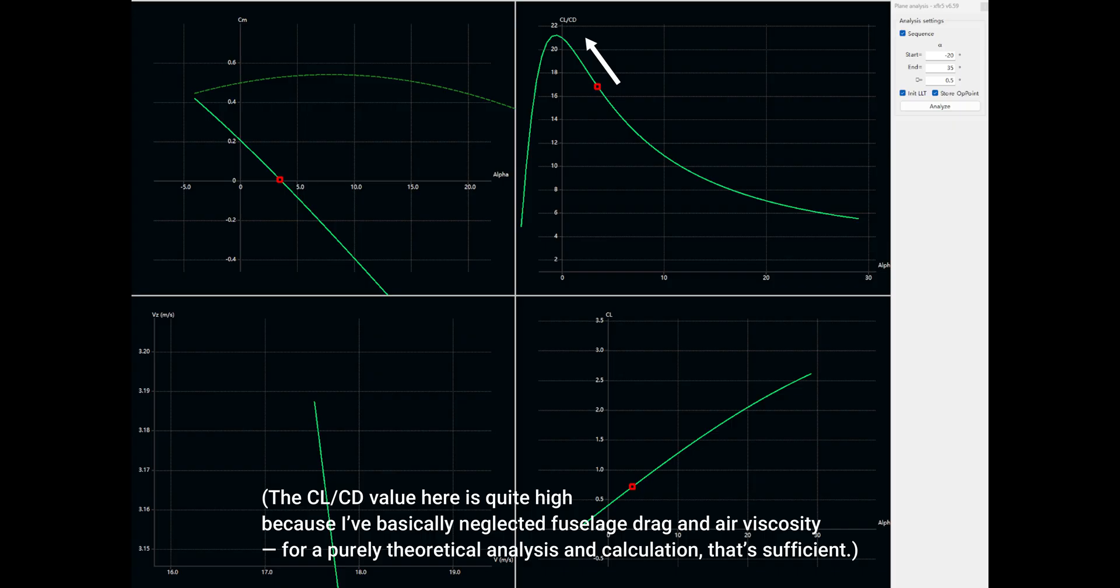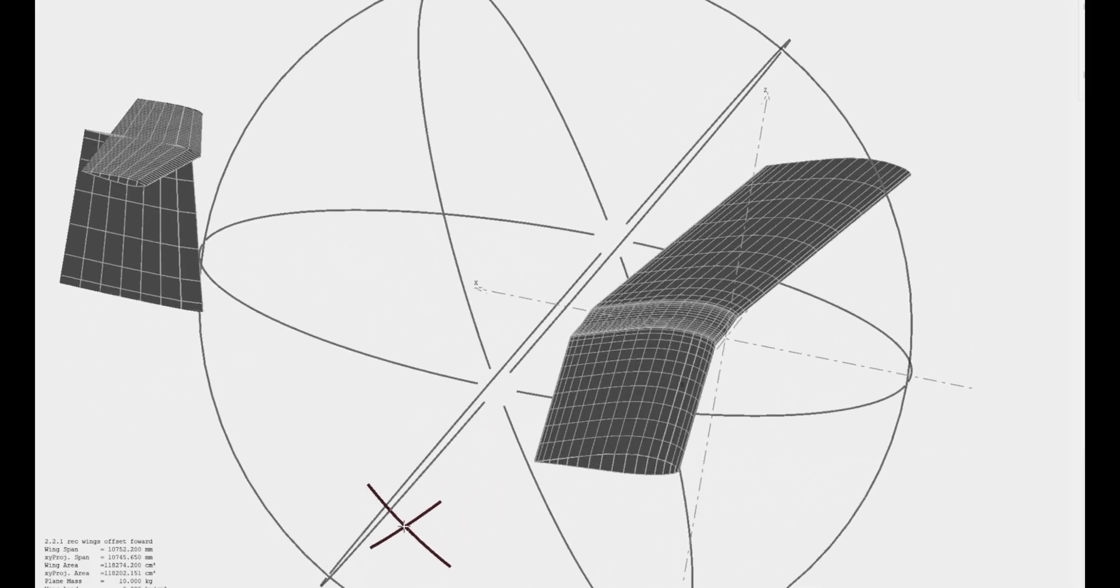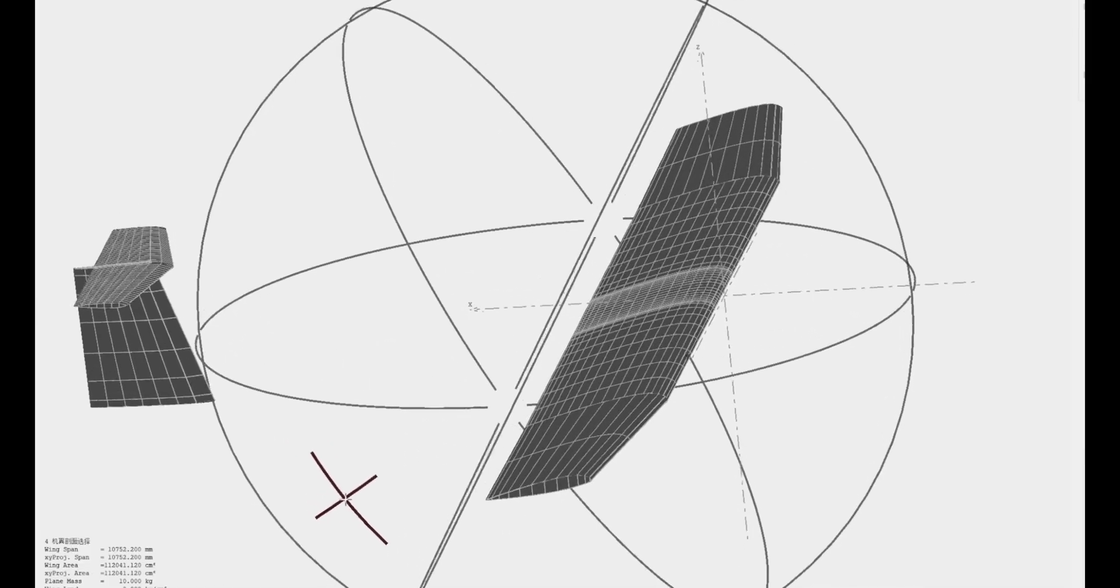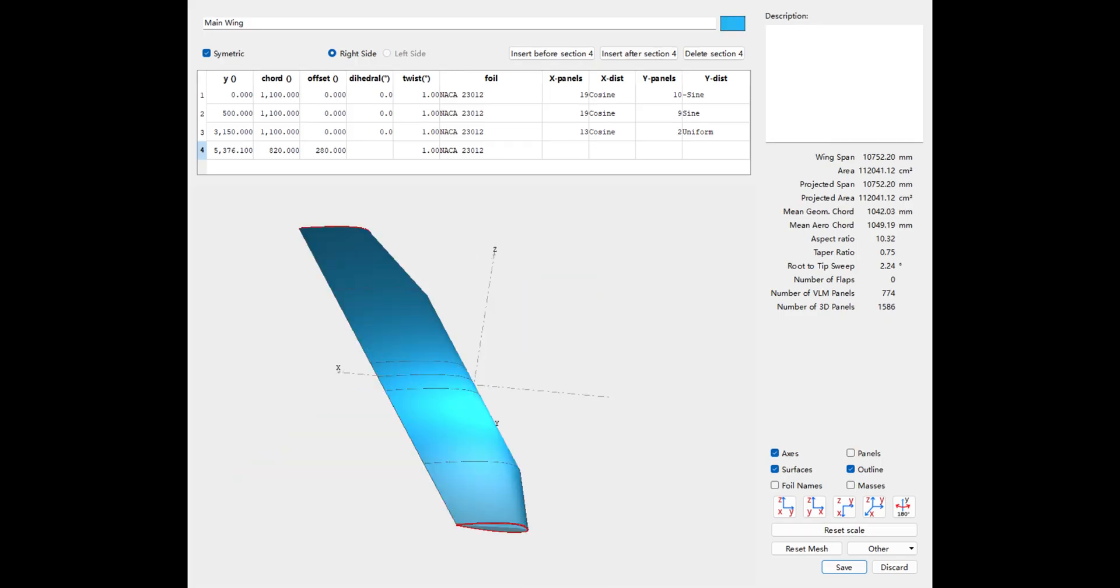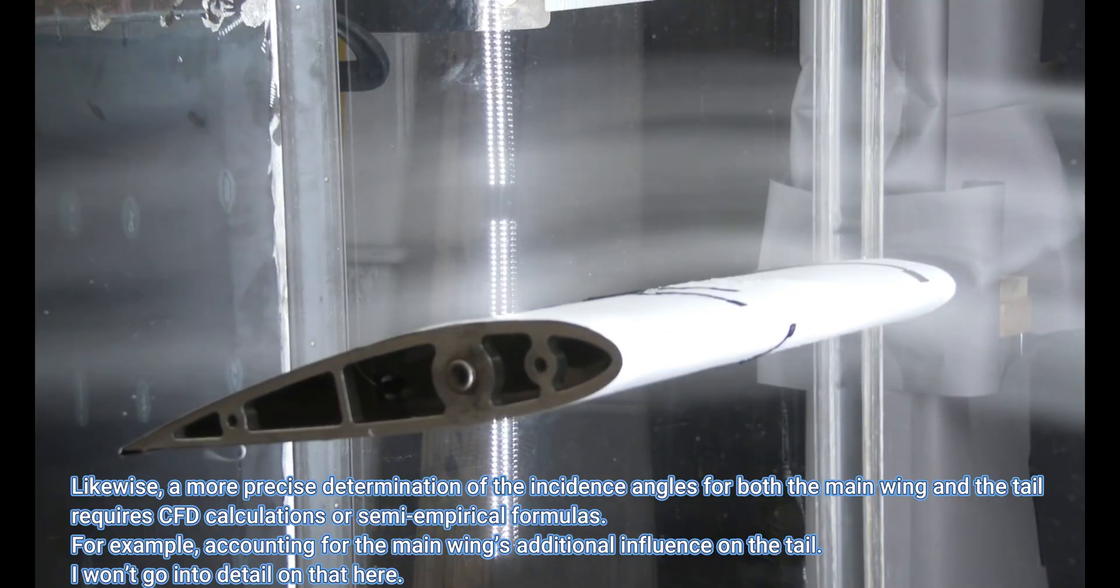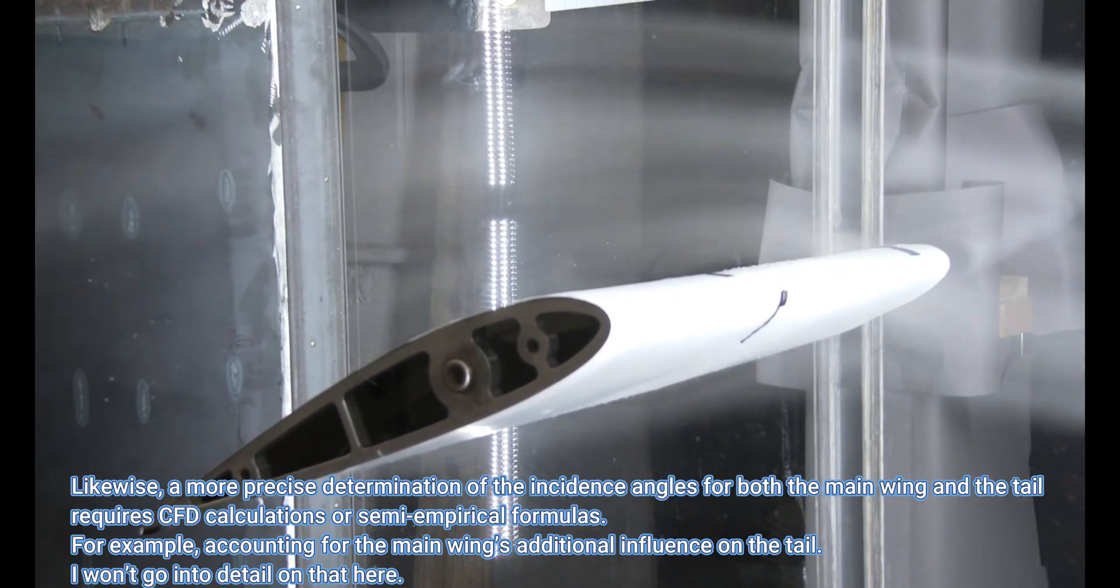However, in this configuration, the CL/CD is not at its peak during stable level flight. This means there's still room to further improve efficiency. Considering the basic performance requirements of a Class III aircraft, the main wing uses a straight wing design, without any forward or backward sweep. Straight wings perform better at low speeds and also help reduce manufacturing costs. In the original model, the main wing's incidence angle was about 2.5 degrees. By comparing CL/CD values, I reduced the incidence angle to 1 degree. Especially from the CD results, this adjustment slightly reduces induced drag and delays flow separation, further improving efficiency.